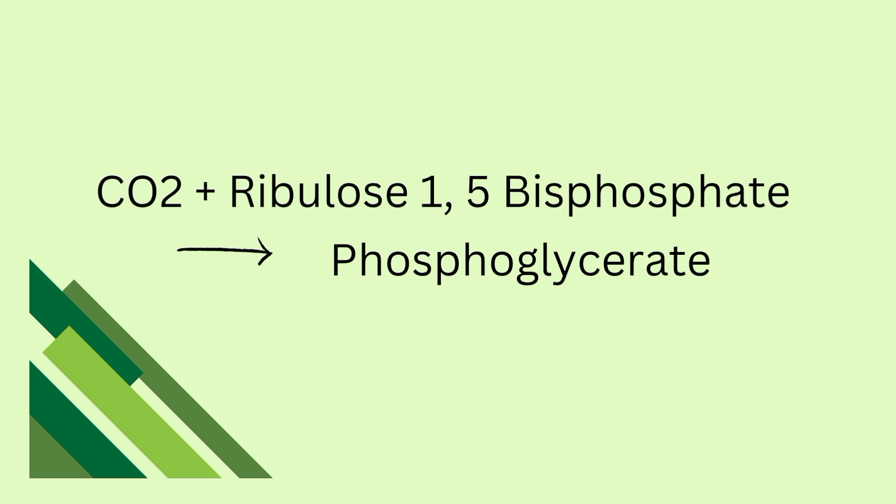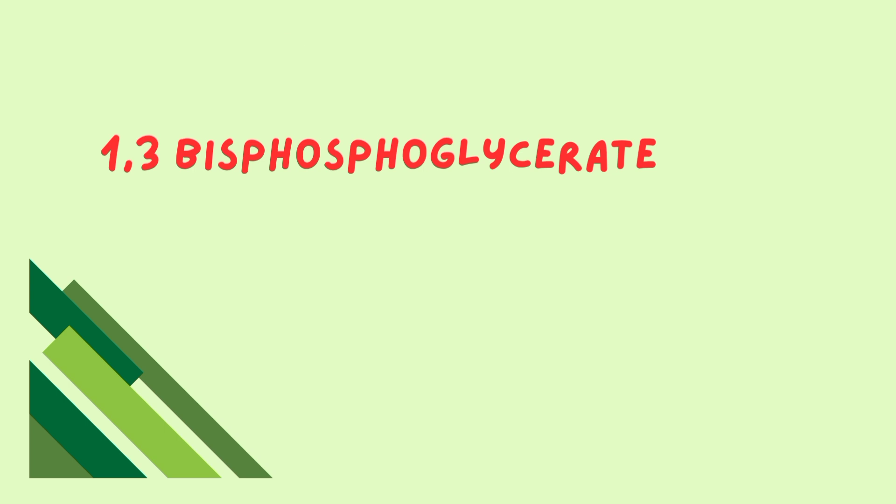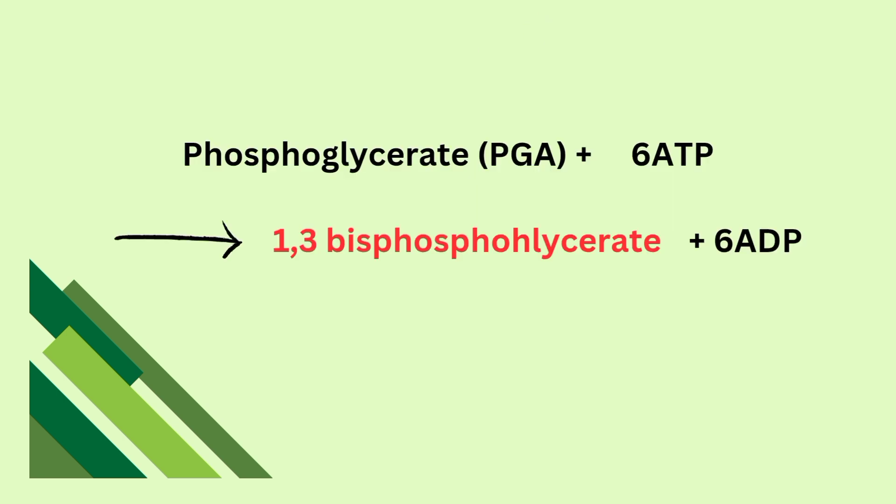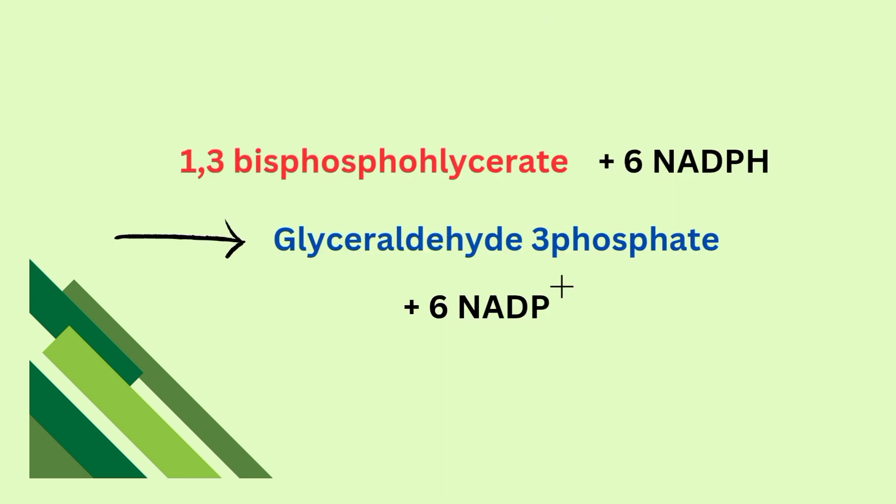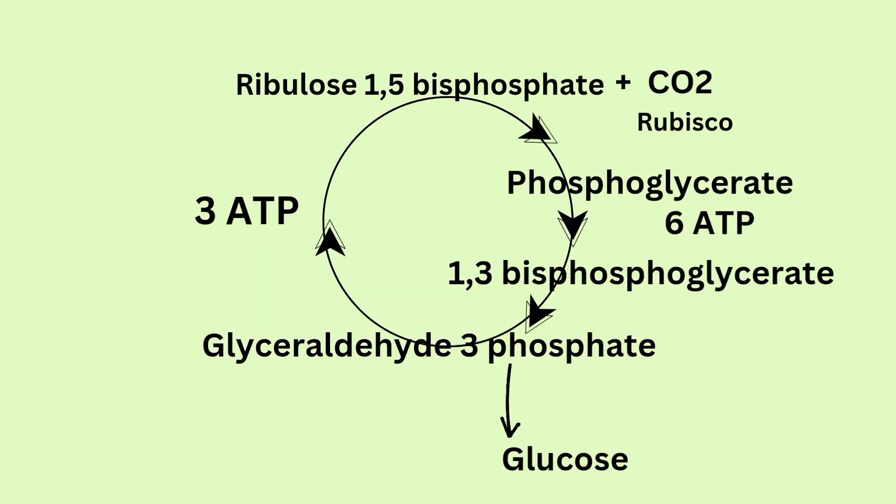The ATP and NADPH produced during light reaction is used to convert PGA into another intermediate molecule called glyceraldehyde-3-phosphate, or G3P. ATP is oxidized to ADP and NADPH to NADP+. This is followed by regeneration stage, where some G3P molecules form glucose, while some G3P is recycled back to RUBP using ATP, which continues the cycle.